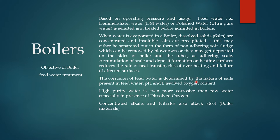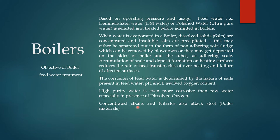Corrosion of feed water is determined by the nature of salts present, the pH of the water, and the dissolved oxygen content. High purity water like DM water or polished water is more corrosive than raw water, especially in the presence of dissolved oxygen — so if oxygen is present in boiler feed water, it is highly corrosive. We must remove dissolved oxygen. Concentrated alkalis or nitrates in boiler feed water will also attack the steel or boiler material, so chemical dosing is required.